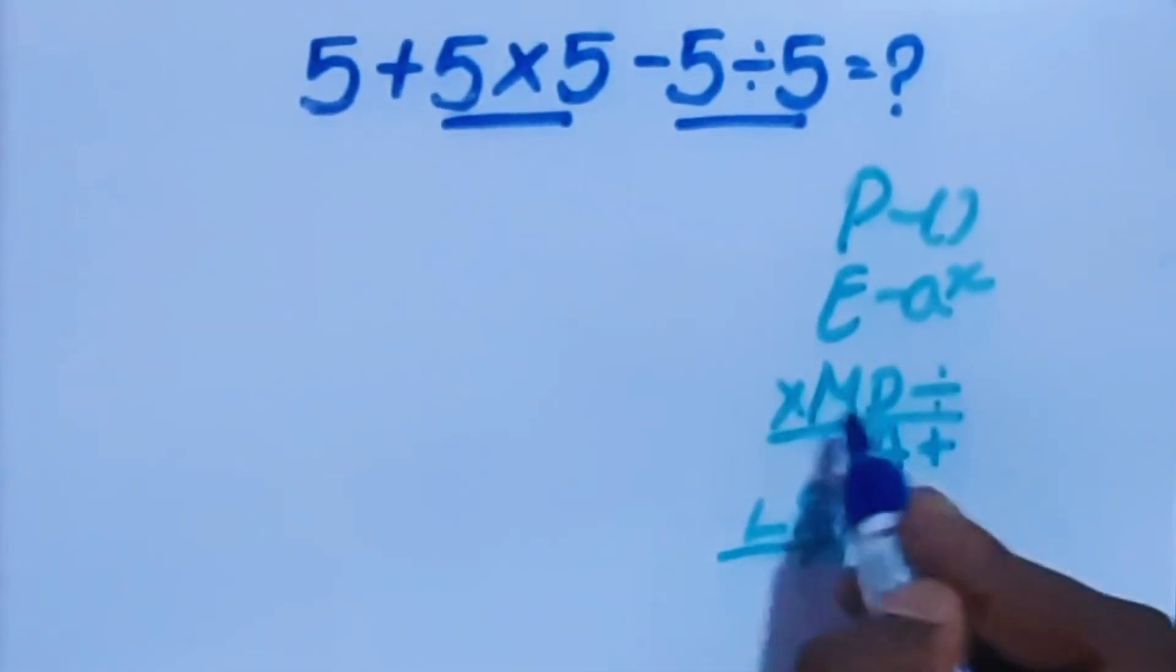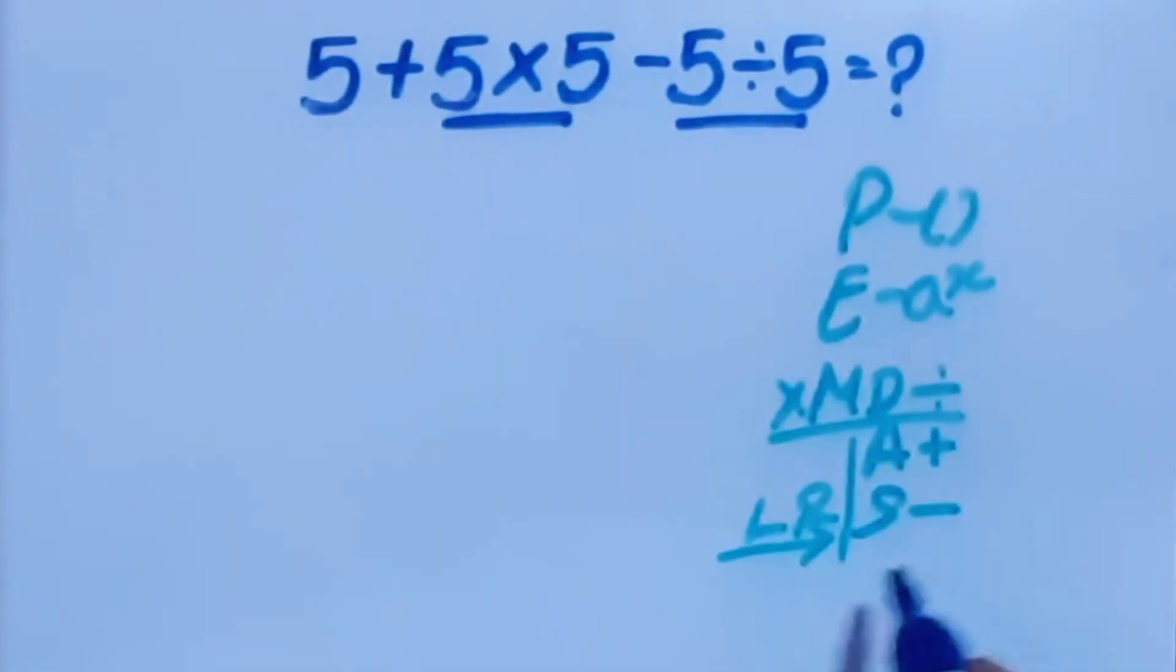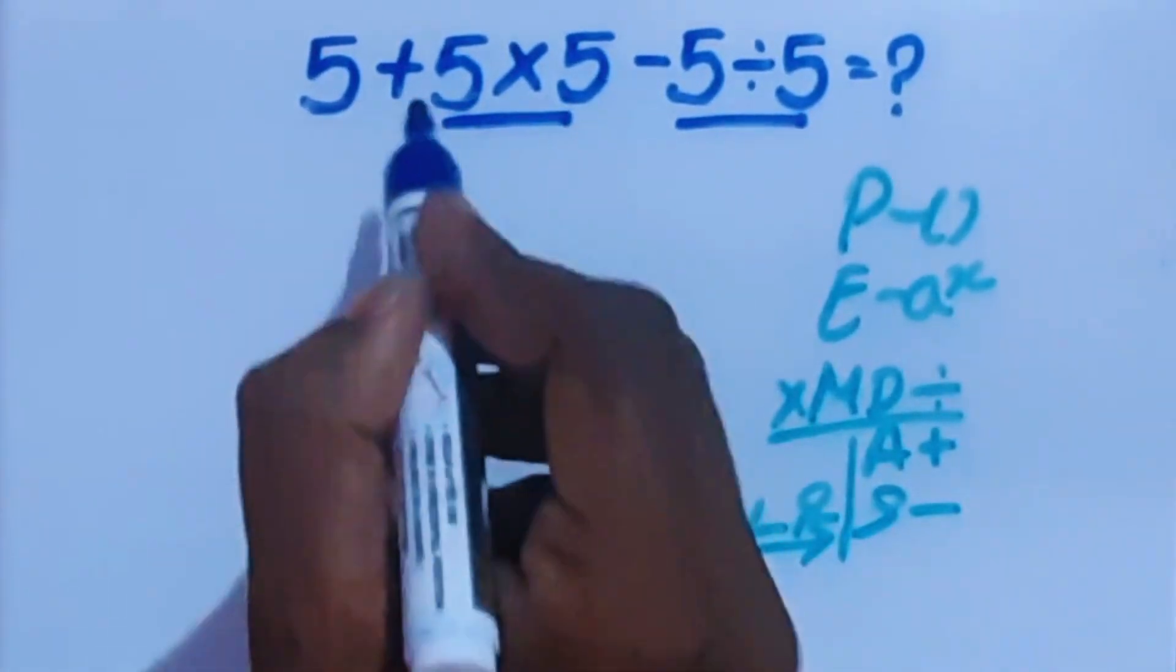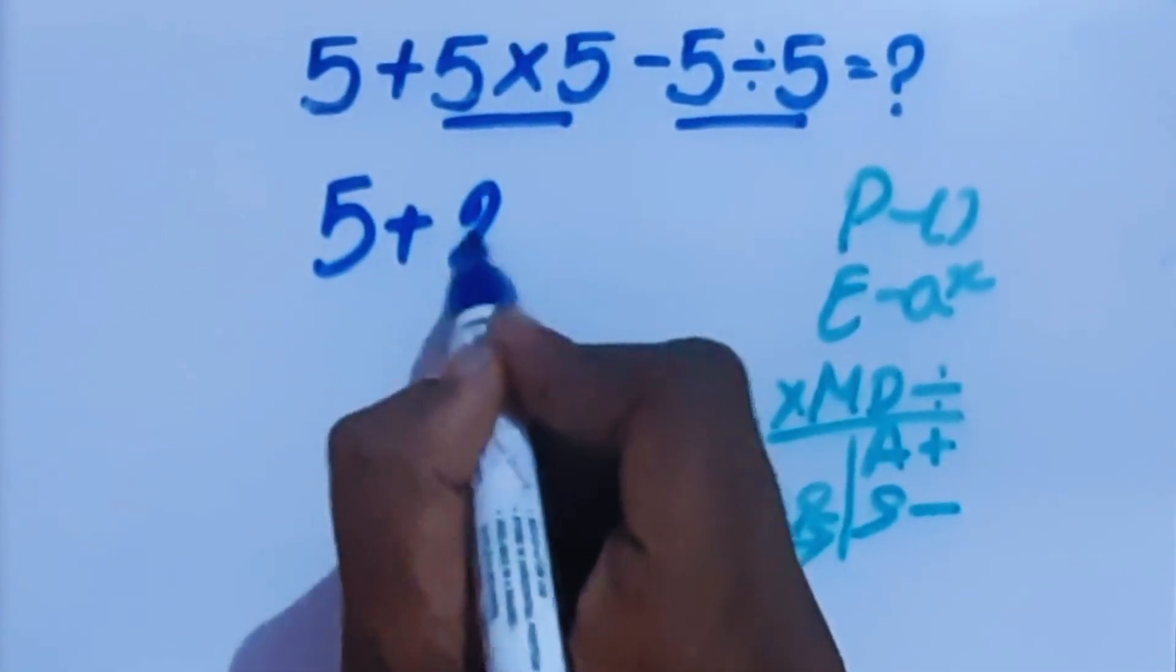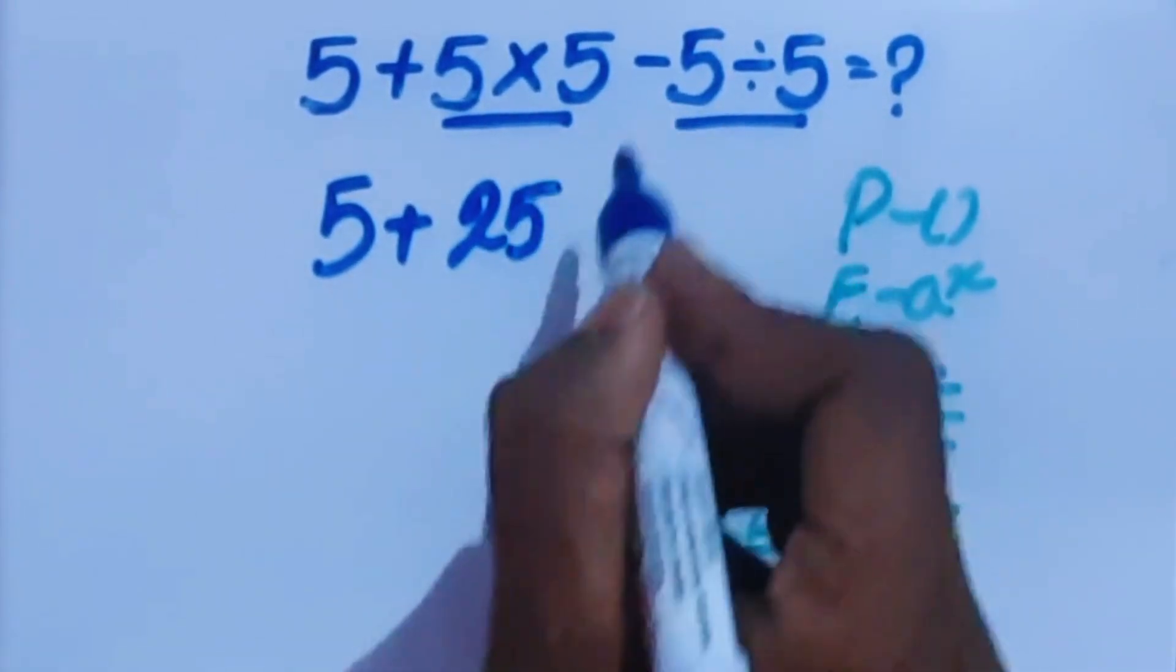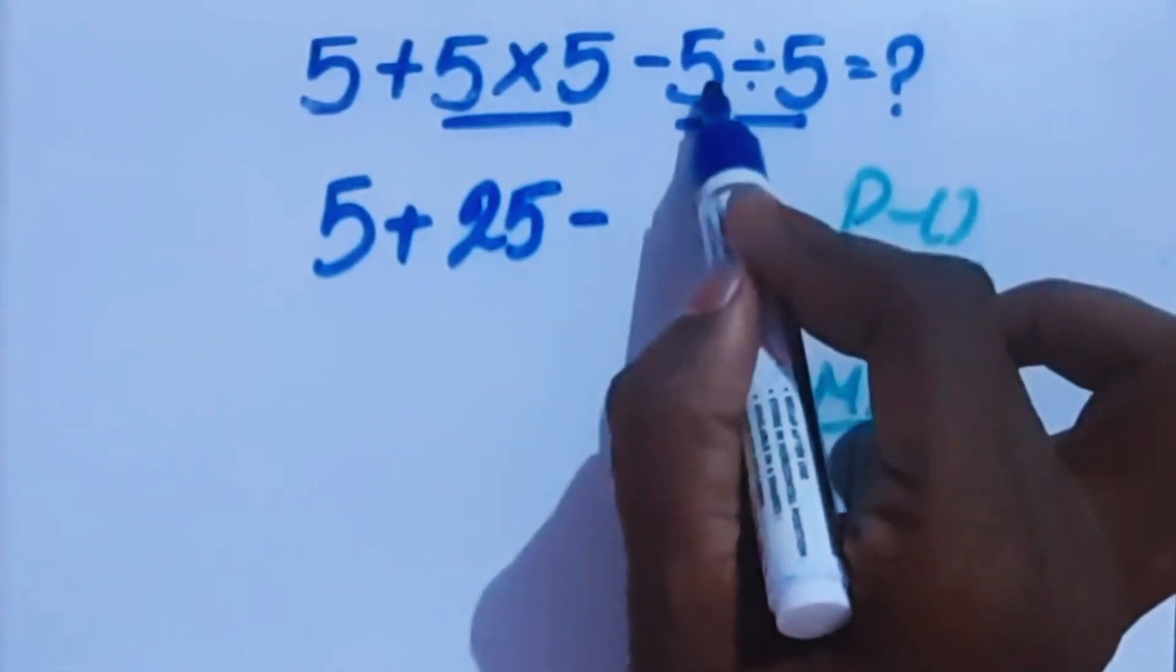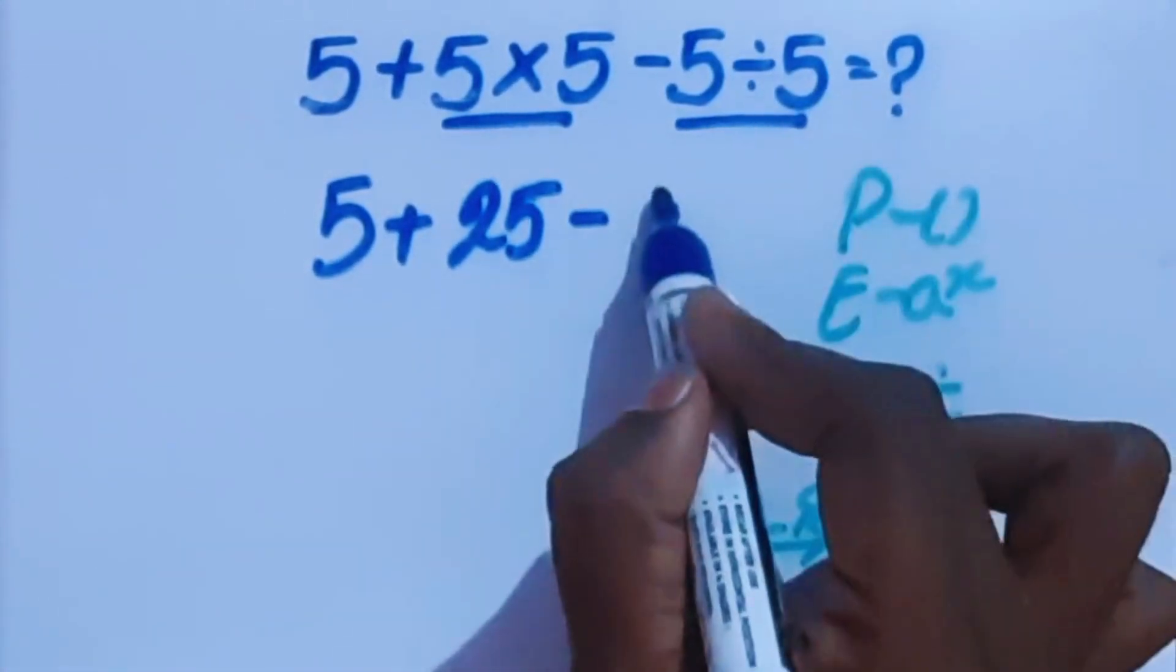So we have to do multiplication and division before addition and subtraction. Here, 5 plus 5 times 5 is 25. This minus here, 5 divided by 5 is 1.